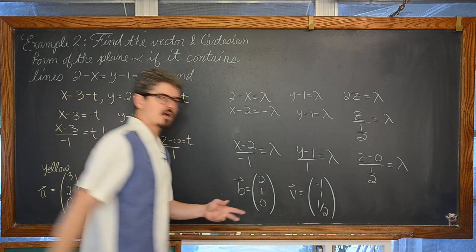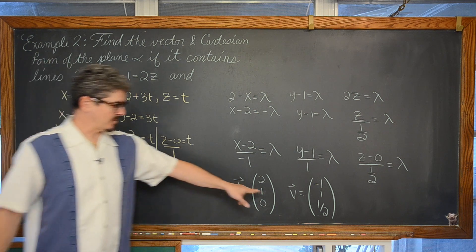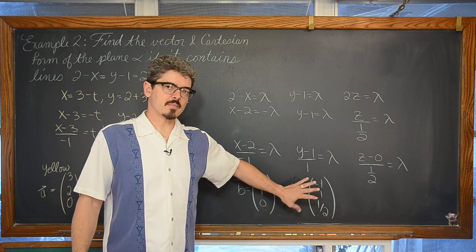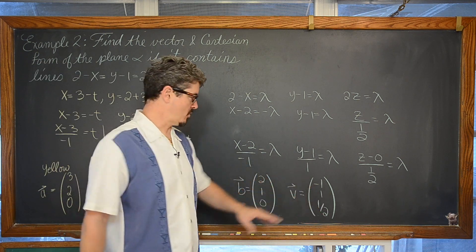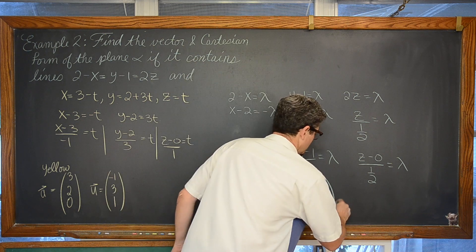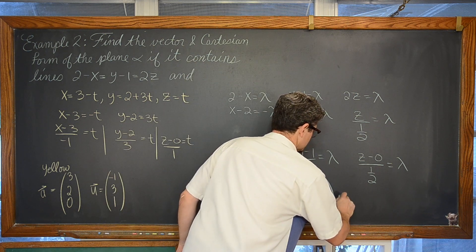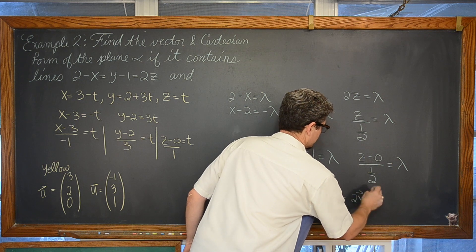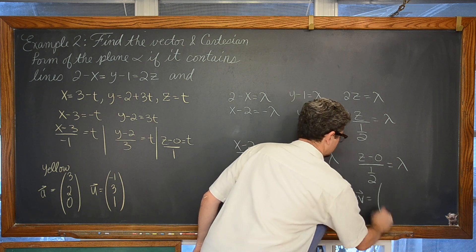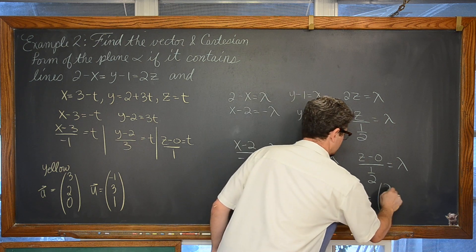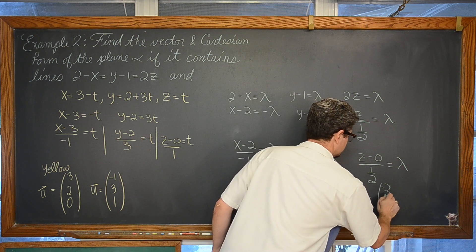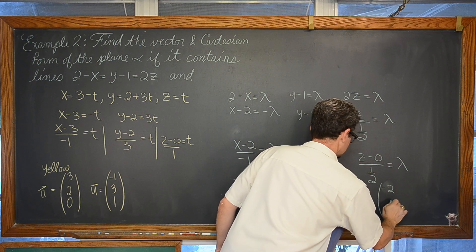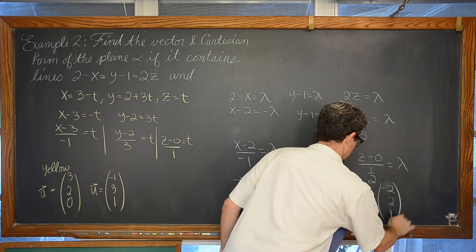For the rest of this problem I don't want to work with a fraction. Since it is just a direction vector, its magnitude is not important, so I am going to multiply it by 2. That gives a scaled direction vector of (-2, 2, 1).